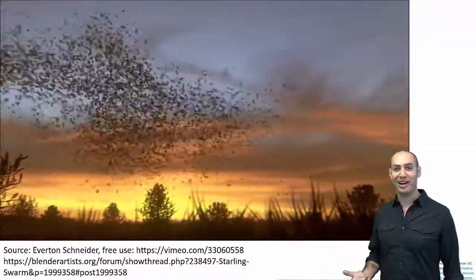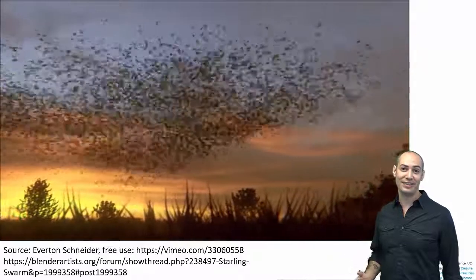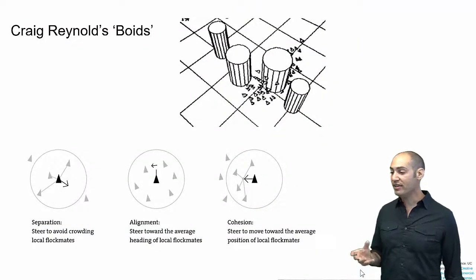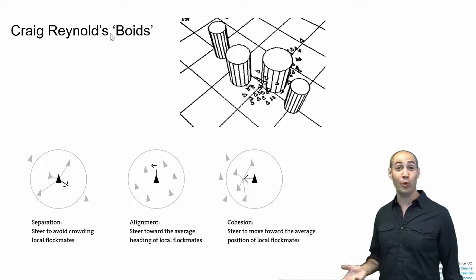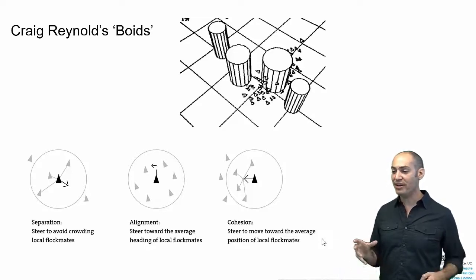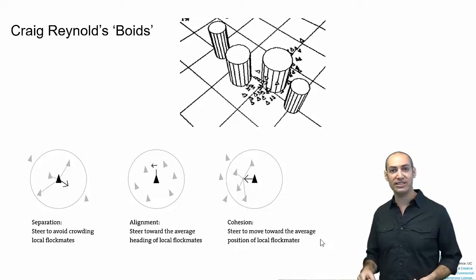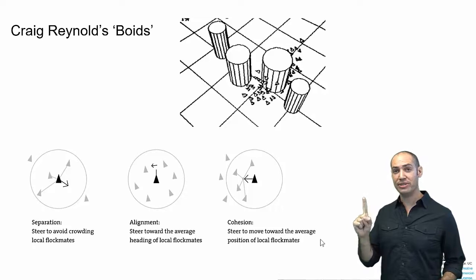One explanation was provided by Craig Reynolds in the 1980s. Craig Reynolds was a computer scientist working at Sony, and he came up with an explanation which he called Boids, which is a play on a mispronunciation of birds. I believe he was from Boston. He situated computer agents in a simulated physical space and just gave them three simple movement rules: separation, alignment, and cohesion.